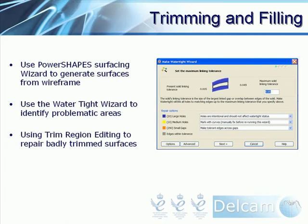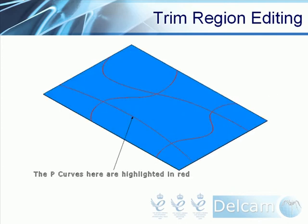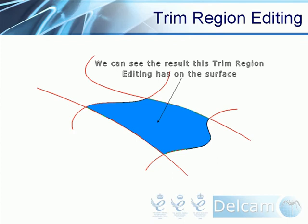One method of fixing is using trim region editing to repair badly trimmed surfaces. Trim region editing contains PowerShape-specific terms worth understanding: it involves the creation of p-curves and trimming boundaries. A p-curve can be created on a surface; the points that influence the curve are called p-points, and p-curves can be used to guide trimming boundaries. In this example, a surface with a number of p-curves highlighted in red is shown. Following the p-curves, we can sketch a trimming boundary across the surface. The result is that the boundary created from the p-curves trims back any unwanted areas of the surface.